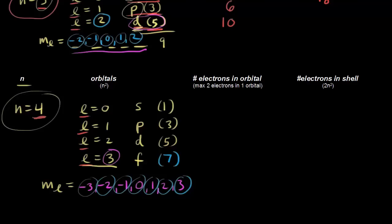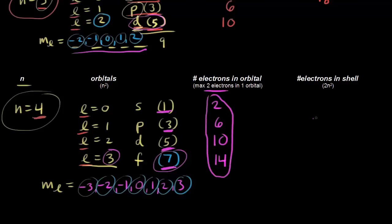For the maximum number of electrons: one s orbital holds two electrons; three p orbitals hold three times two equals six; five d orbitals hold five times two equals ten; and seven f orbitals hold seven times two equals fourteen. The total is two plus six plus ten plus fourteen equals thirty-two electrons in the fourth shell. Using two n squared: four squared is sixteen, times two equals thirty-two.